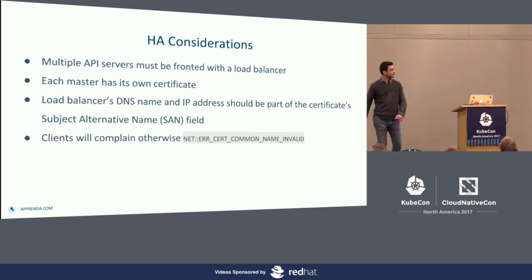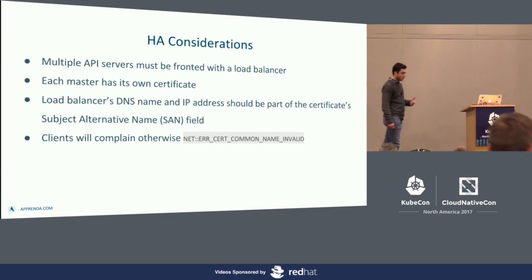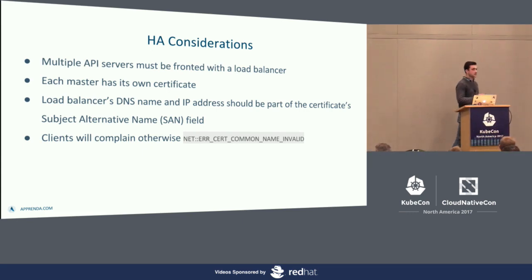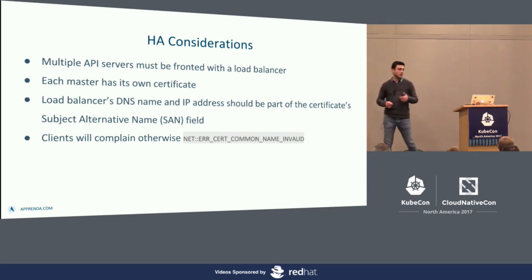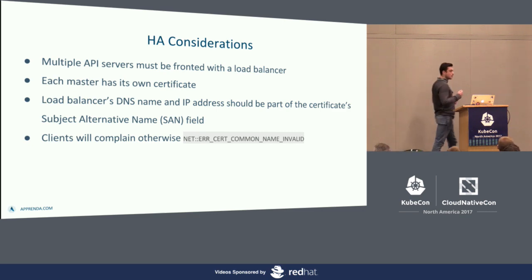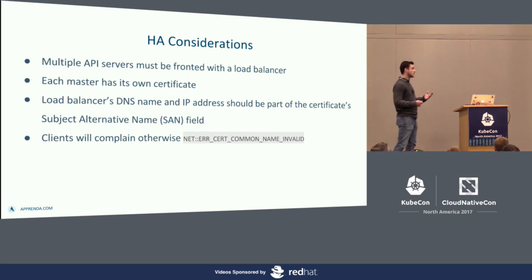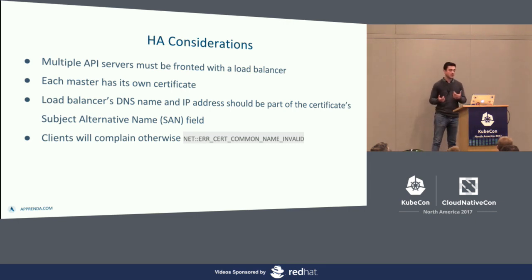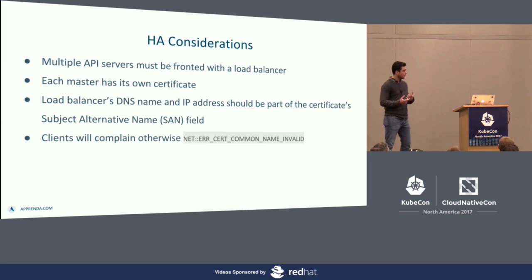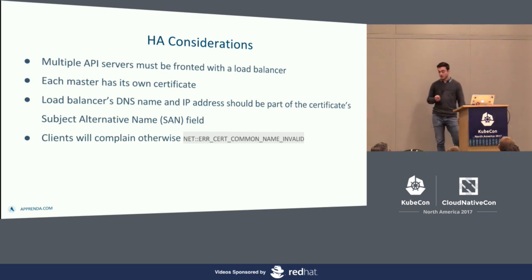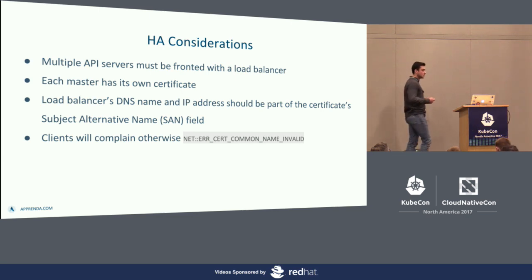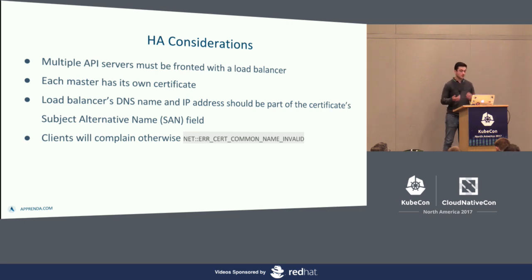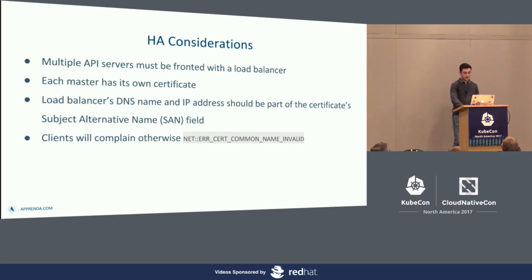There's an important gotcha with certificates for the master: when you're setting up multiple API servers for an HA cluster, you want to make sure the load balancer's IP address and DNS name are part of that certificate. Otherwise, whenever a client tries to talk to an API server through your load balancer, the client will try to validate that certificate and complain — saying the common name on the certificate is not what it's trying to talk to. So whenever you're setting up multiple masters, make sure the certificates have the load balancer's DNS name and IP address. This is usually taken care of by your favorite installation tool via a configuration parameter to set extra names in the master cert.